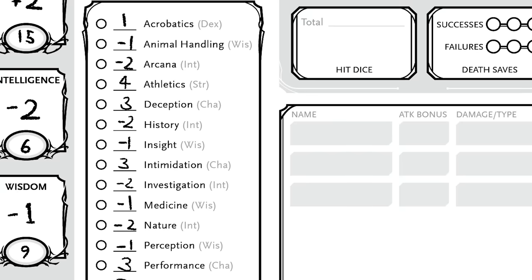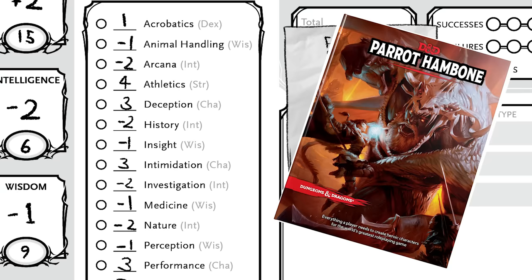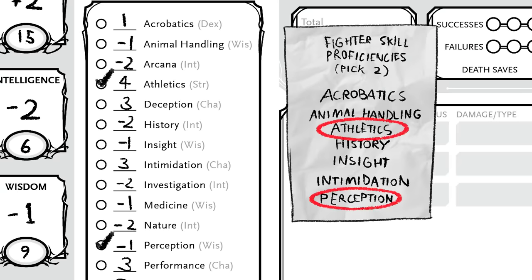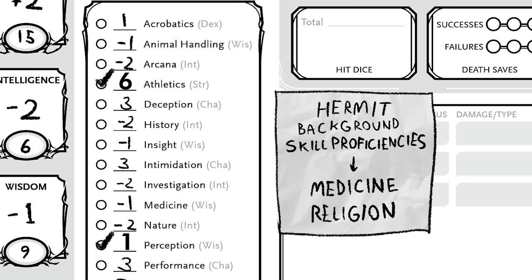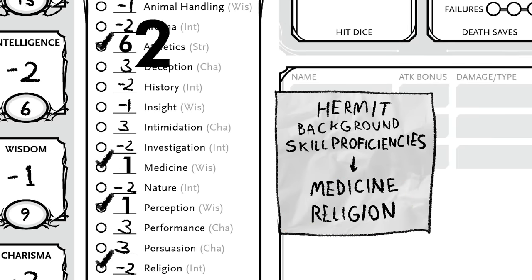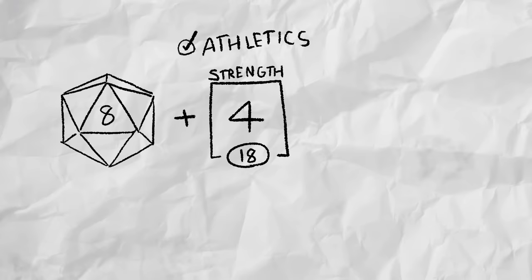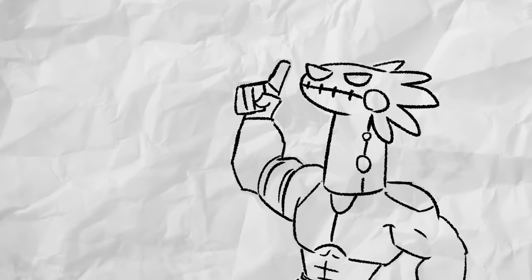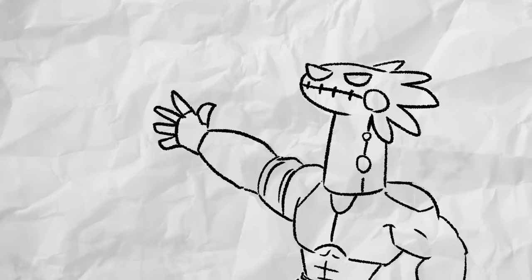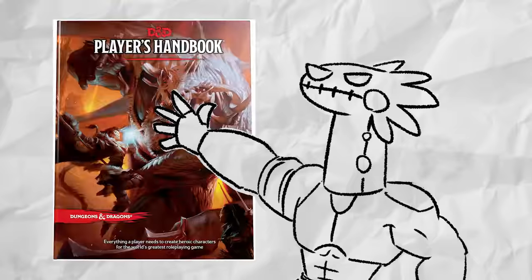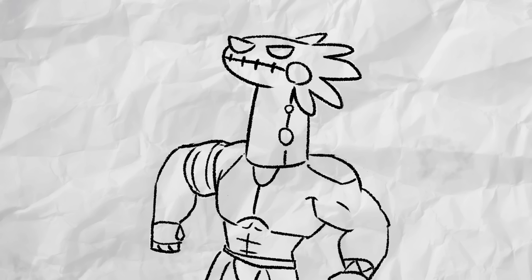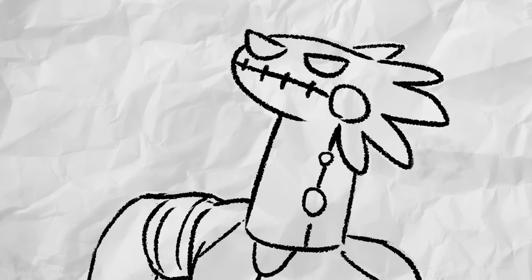And as far as saving throws and skills go, this will be signified by a little check mark. And which ones those little check marks go into is determined by a combination of your class, background, and on rare occasion, race. For example, a fighter has proficiency in strength and con saving throws, so add those numbers. They also get to choose two skills to be proficient with from this list. Whenever you're proficient with something, it means you get to add this sexy number on top of whatever appropriate ability modifier that's added to the dice roll you make. Proficient in athletics, roll a d20, add strength mod, add proficiency bonus.